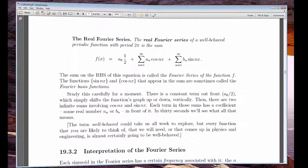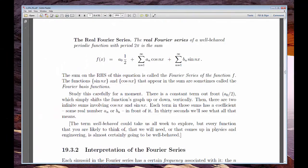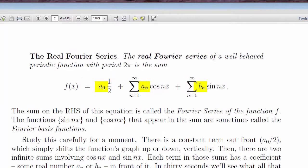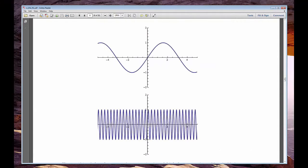The a sub n and b sub n are collectively called the Fourier coefficients. They tell us how much of each specific sine or cosine we need in our recipe to build the original f. Some functions require a large dose of, say, sine x or cosine 2x to make the sum come out right.